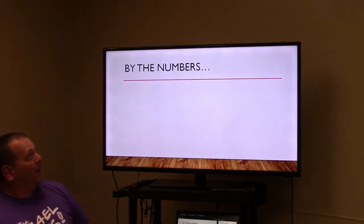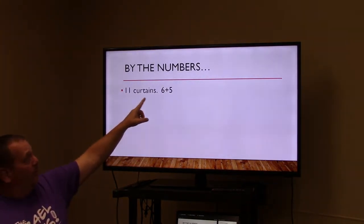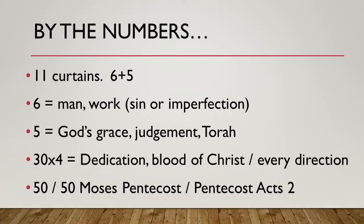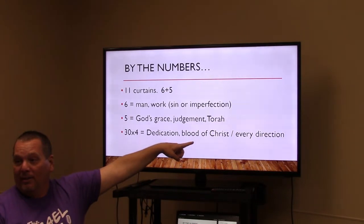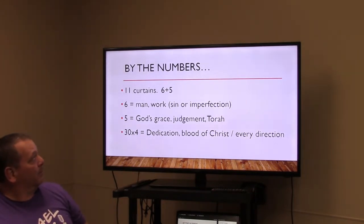By the numbers: eleven curtains were split into six and five — six is the number of man, sin, and imperfection; five is God's grace, judgment, and Torah. The curtains were 30 cubits long by 4 cubits wide — 30 is the number for dedication of blood or blood sacrifice, and four represents every direction, north, south, east, west. So the blood of Christ the Messiah goes to all ends of the world.